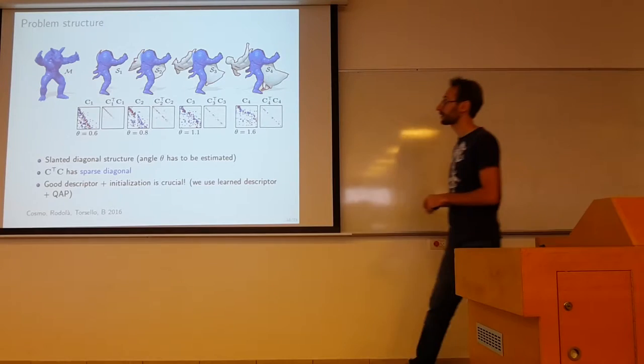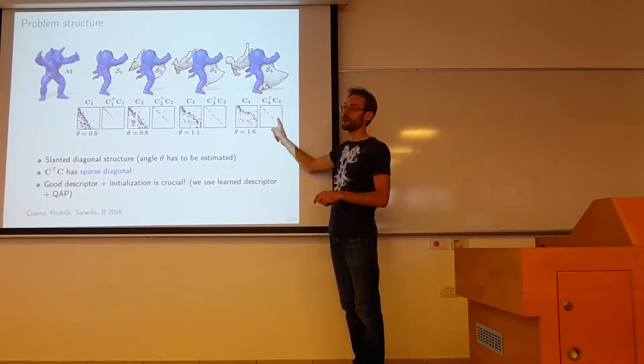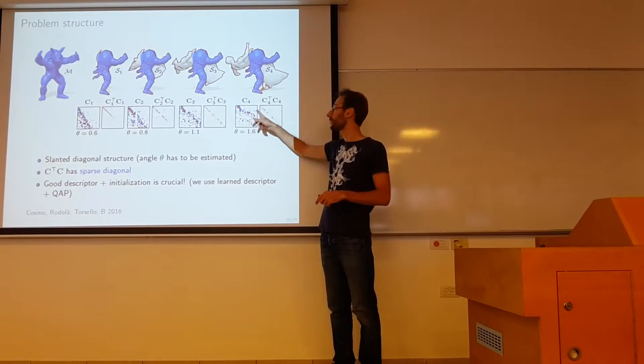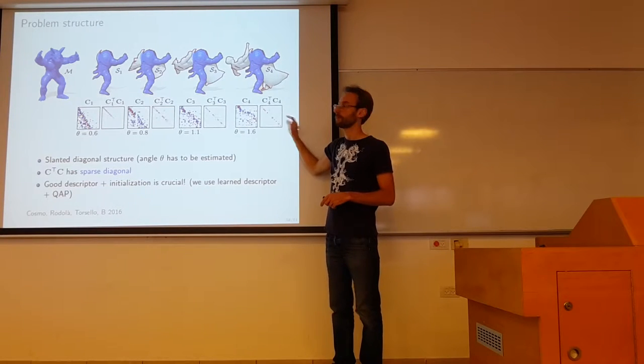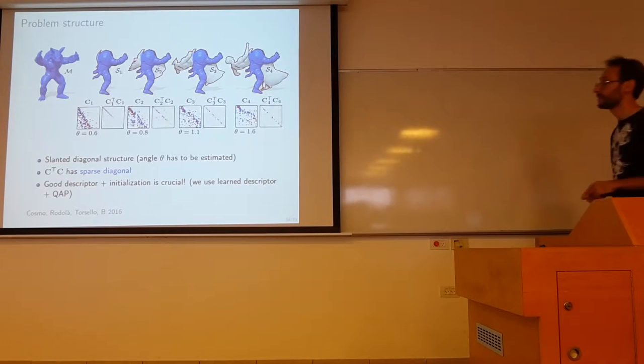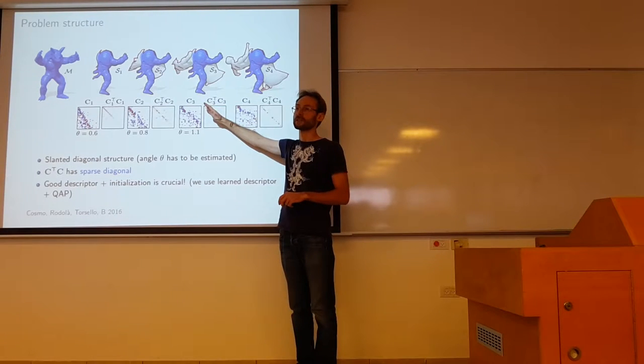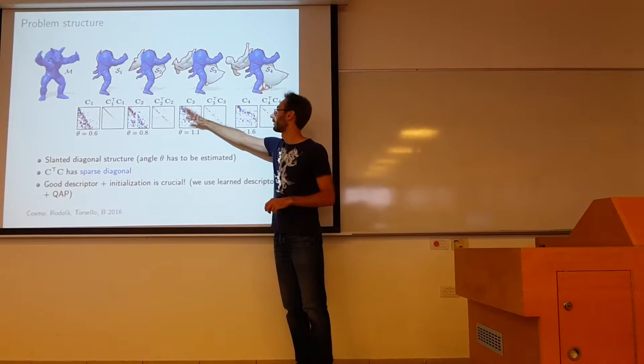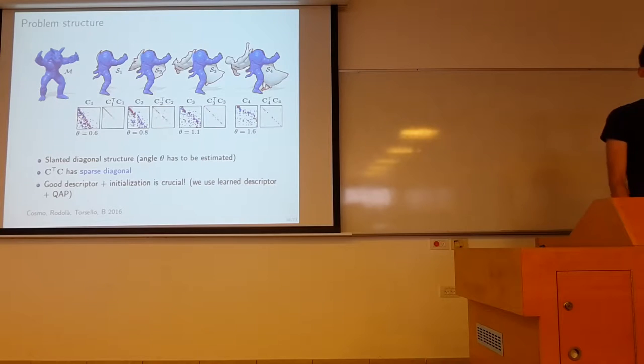So this is how it looks like the structure of the matrices. And there are the C transpose C. So here you can see actually the missing mark. You see a lot of zero columns and rows in this picture. If you look at C transpose C, you will see that those have a sparse diagonal. And basically this is what we use as a penalty in this case. We also estimate the angle of this one. We include it as an optimization variable into the optimization problem. So we allow to search for the slant.